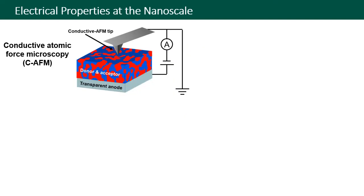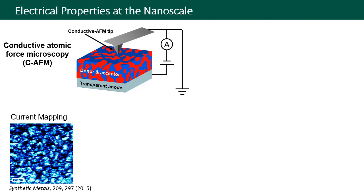Conductive AFM involves using a metal-coated AFM probe as a movable nanoscale electrical contact. By applying a voltage between the probe and a counter electrode, current can be measured through the intervening material. We've used conductive AFM to map the conductive grain structure in conducting polymer films.